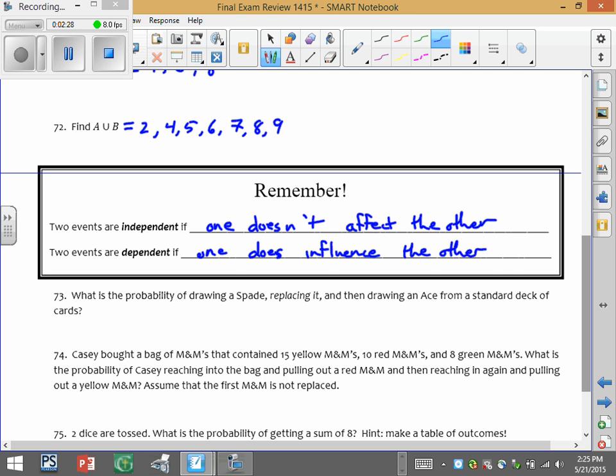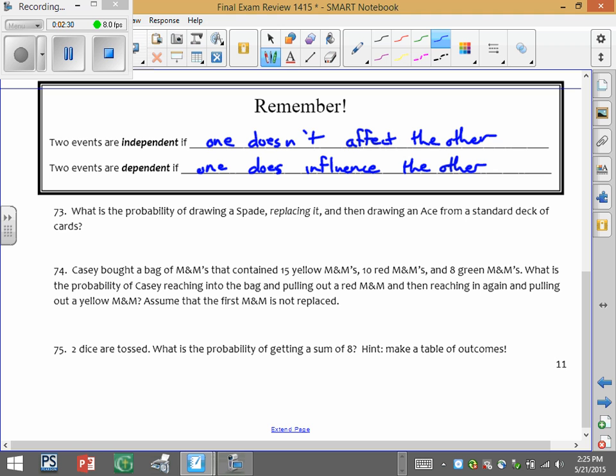So a couple scenarios for you. What's the probability of drawing a spade, replacing it, and drawing an ace on a standard deck of cards? The replacing it means that one thing is not going to influence the other. So these are independent.